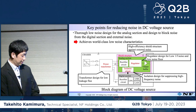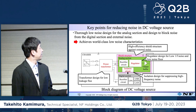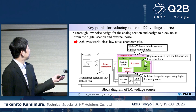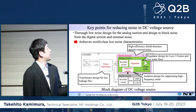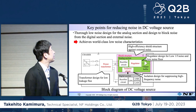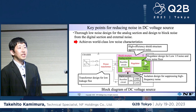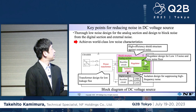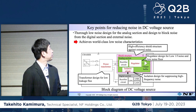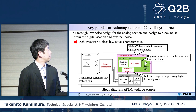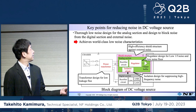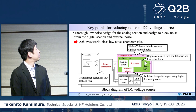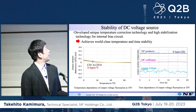Now I'd like to talk about our technologies to realize low noise. In the analog part, we designed the transformer so that it has low leakage flux. We also have a regulator design for low 1/f noise and low noise floor. For external noise, we have a high efficiency sealed structure. From the digital part, we designed an isolation card that blocks noise from the digital section. This isolation circuit can reduce high frequency noise. By combining these technologies, we realized the low noise products.